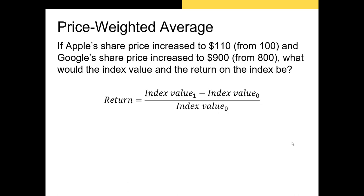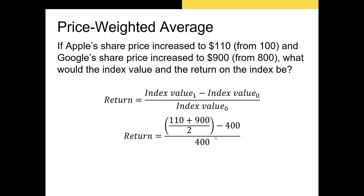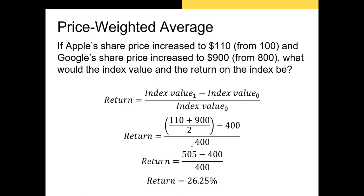Now let's assume the value of the assets in the index have changed over the course of the day. If Apple's share price increased to $110 and Google's share price increased to $900, what would the index value and return be? The index value at the end of the period is 110 plus 900 divided by 2, which is 505. The return is 505 minus 400, divided by 400, which gives us a return of 26.25%.